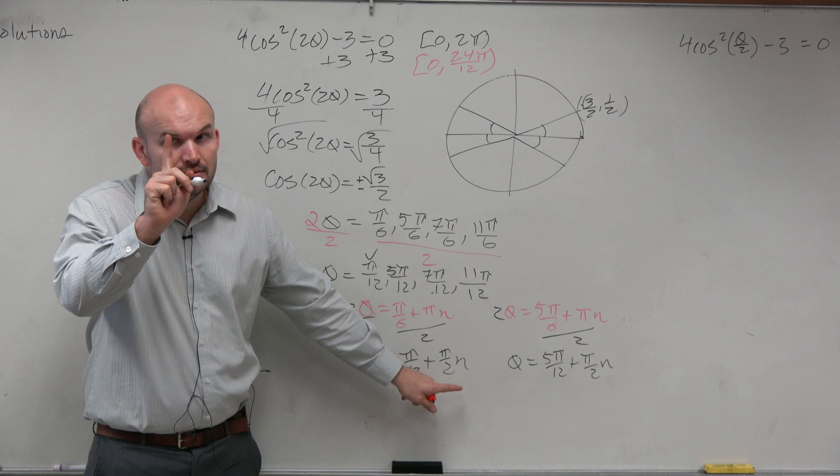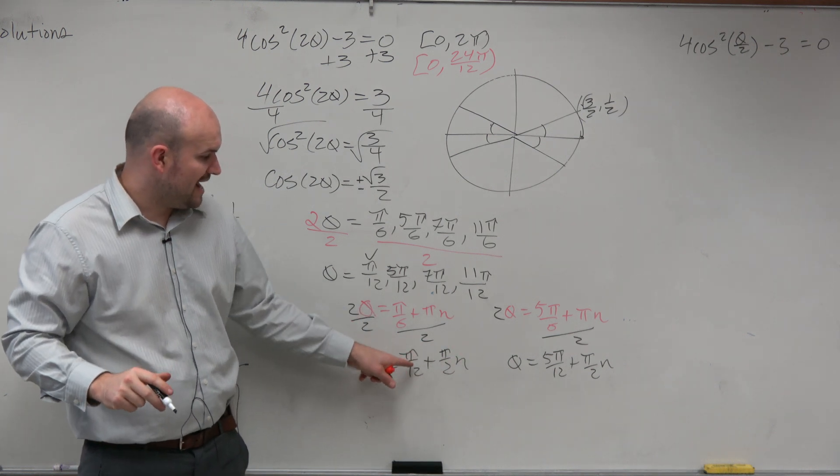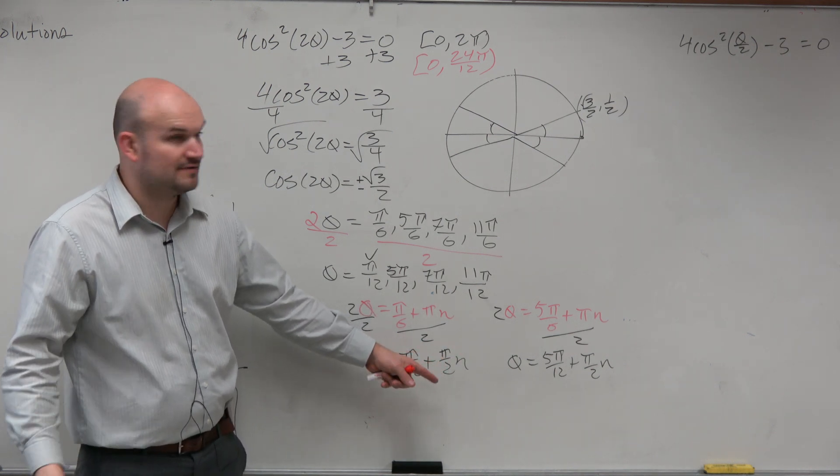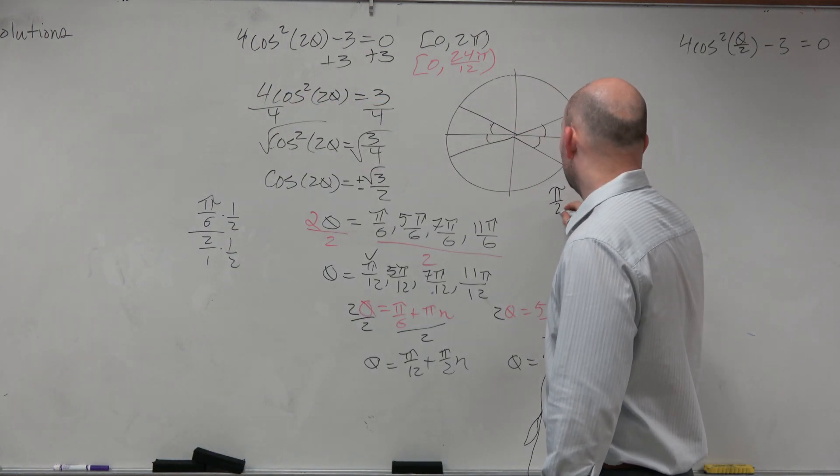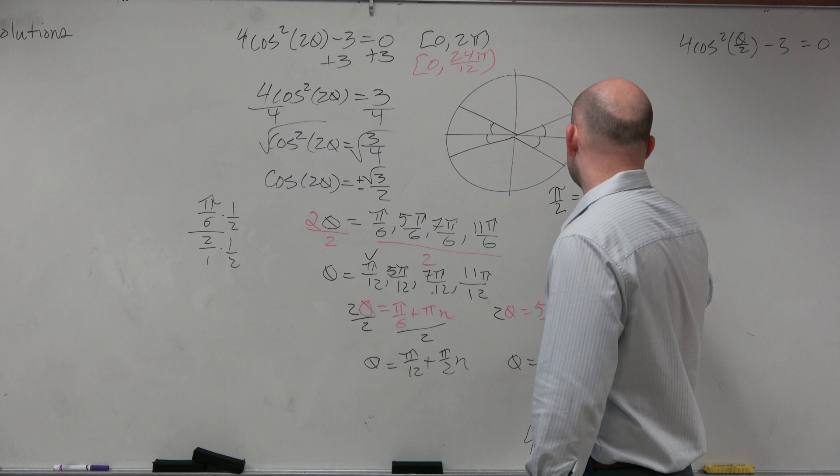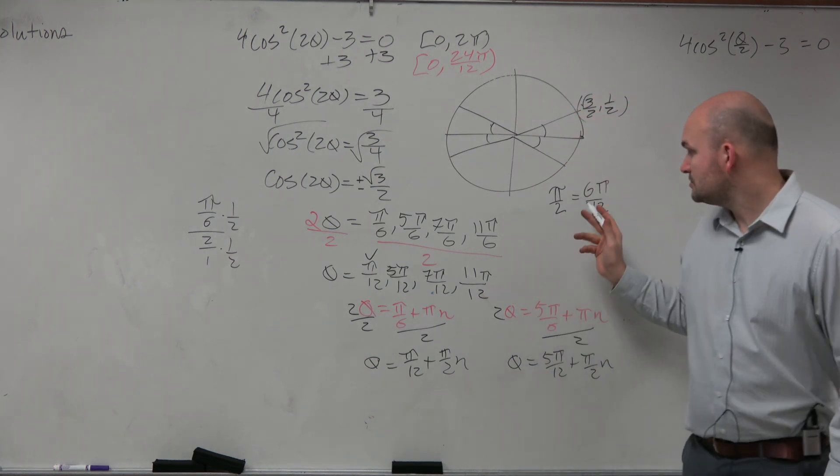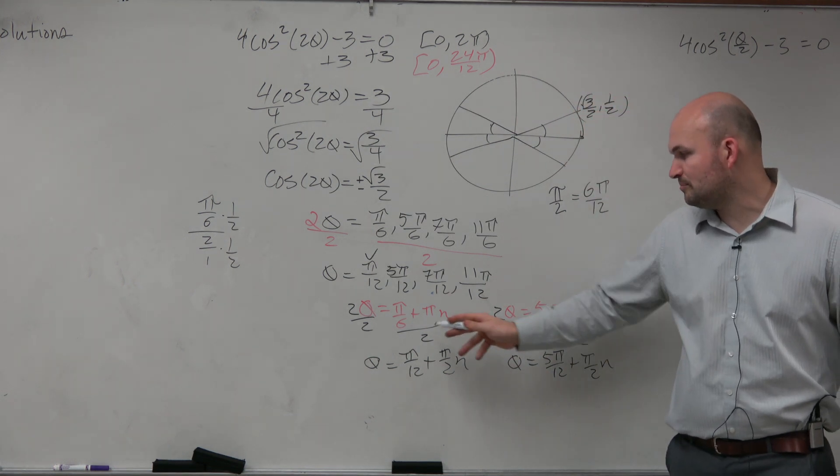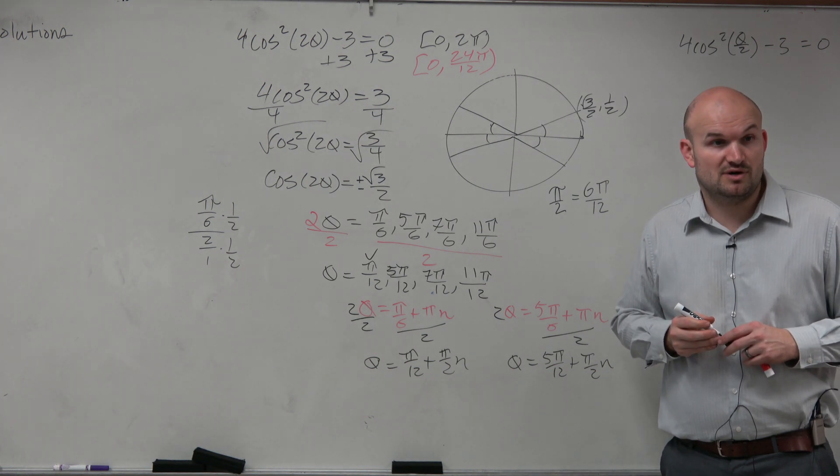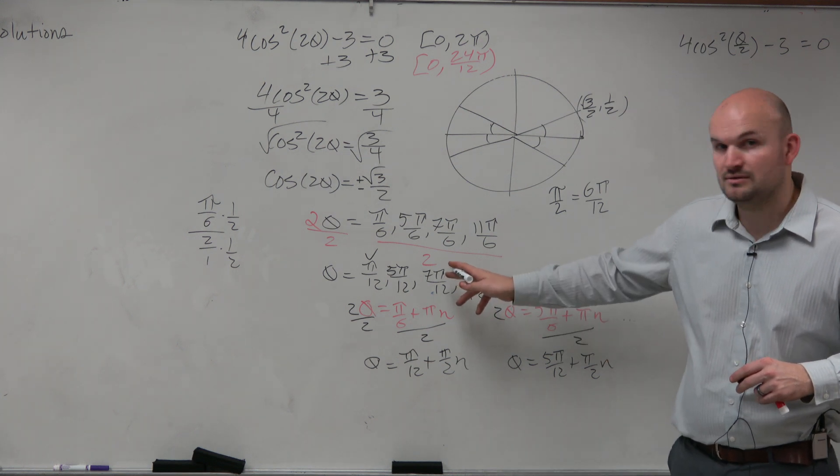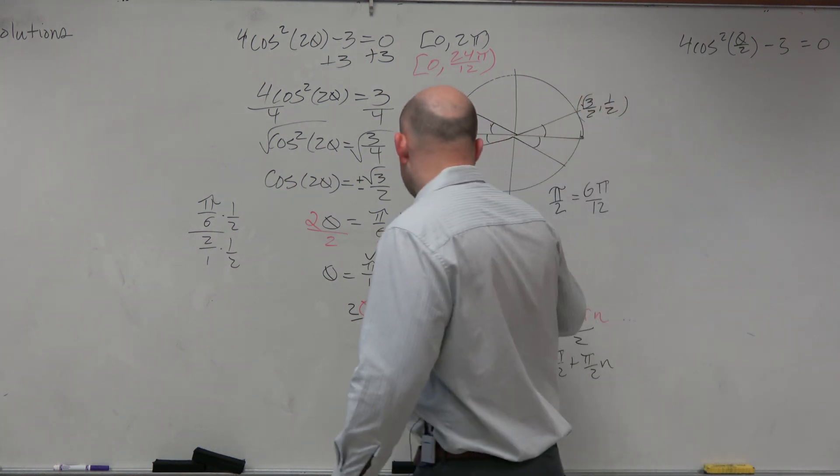What if n was 1? If n is 1, that's pi over 12 plus 1 half. Now, it might be helpful to understand pi over 2 is equal to 6 pi over 12, right? So let's do that. What's 6 pi over 12 plus pi over 12? 7 pi over 12. Do we have that one? Yeah, OK.